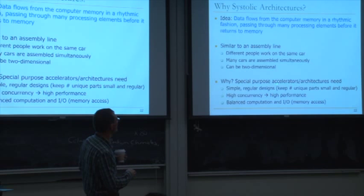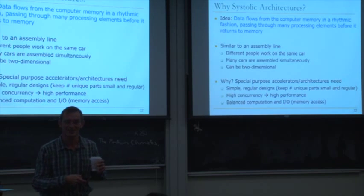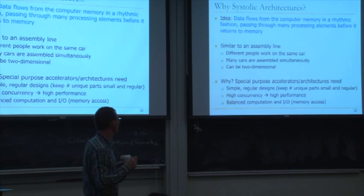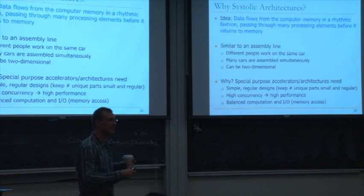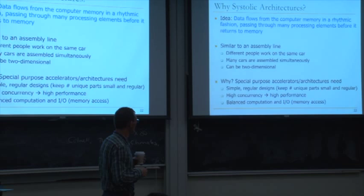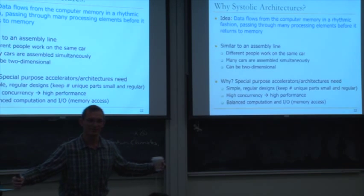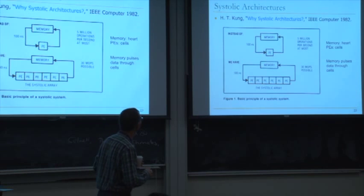People wanted to design special purpose accelerators for image processing. You want simple, regular designs. You want to keep the number of unique parts small and regular. You want high concurrency for high performance. One key issue is balancing computation and input-output memory access requirements. If your bandwidth is not very high, maybe you should do more with the data you bring in — more operations with that data. This is the paper you're assigned. You can think of memory as the heart and the processing elements as the cells.